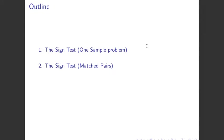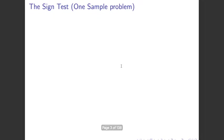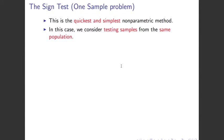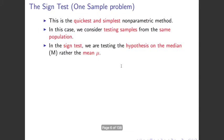There's a one-sample problem where we do a sign test. A sign test is just one type of non-parametric test, and there's one with matched pairs. The one-sample problem sign test is the quickest and simplest method. We are testing samples from the same population. In the sign test, we are testing the hypothesis on the median rather than the mean mu. The median is denoted as m, and we know the mean is denoted as mu.